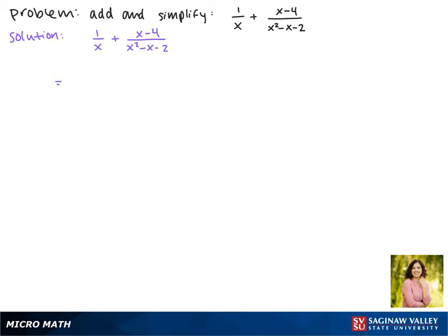Our first step is to factor the denominators. In our first term, the x can't be factored. In our second term, the factors of -2 that add to make -1 are -2 and +1.